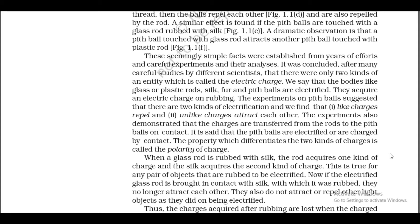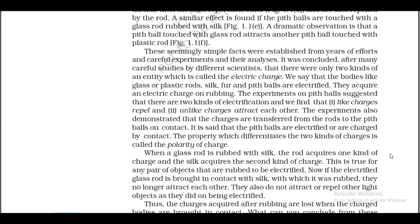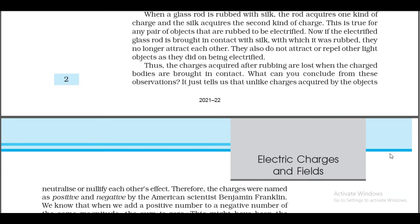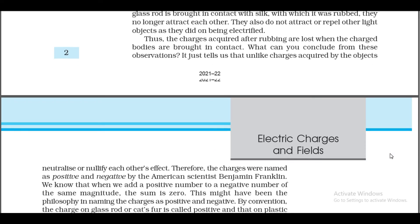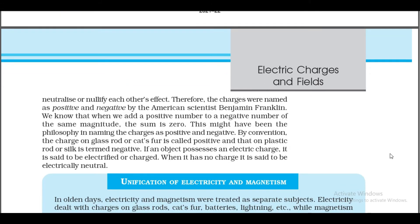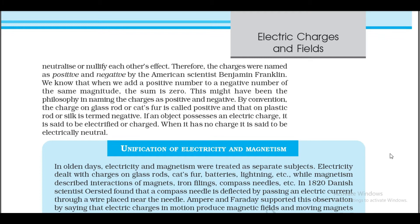Thus the charges acquired after rubbing are lost when the charged bodies are brought in contact. This tells us that unlike charges acquired by the objects neutralize or nullify each other's effect. Therefore the charges were named as positive and negative by the American scientist Benjamin Franklin.